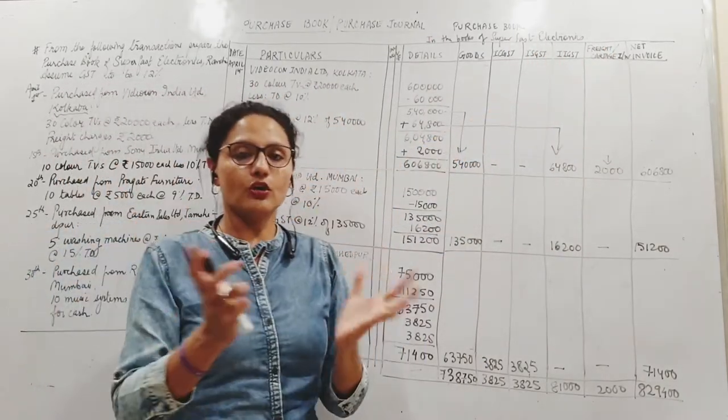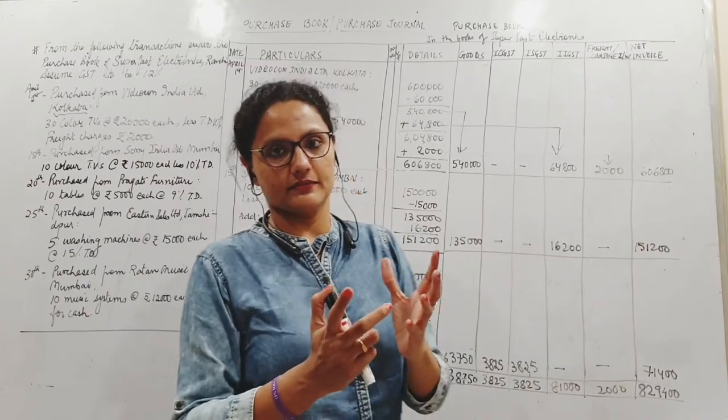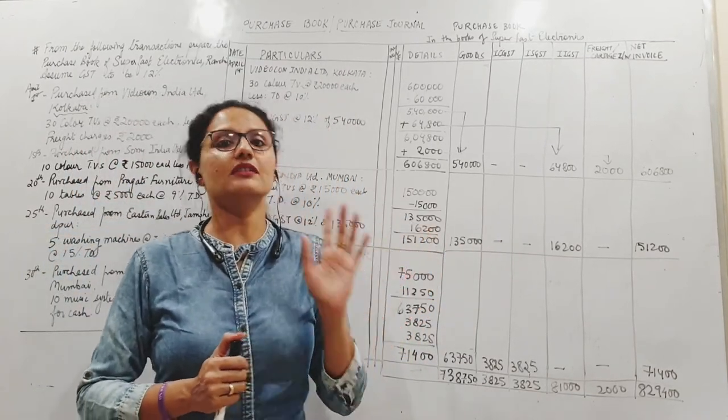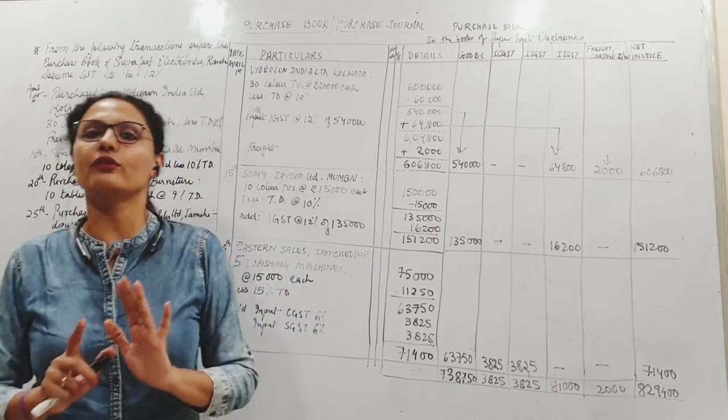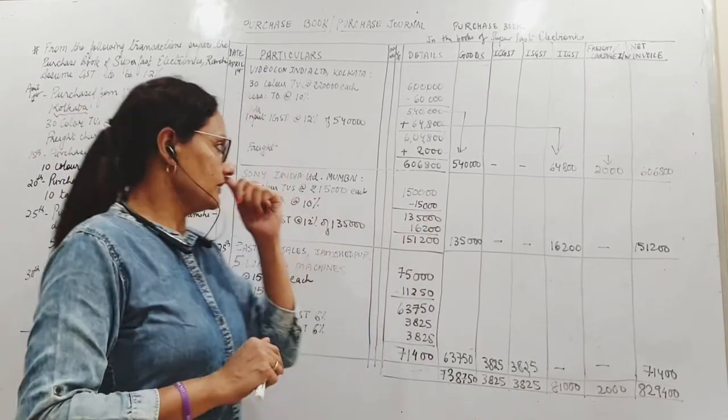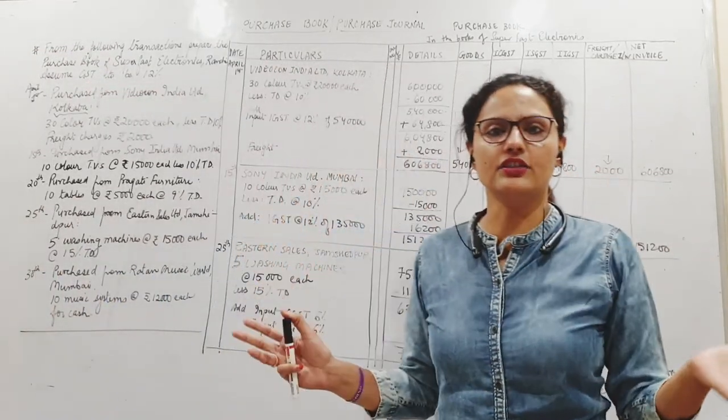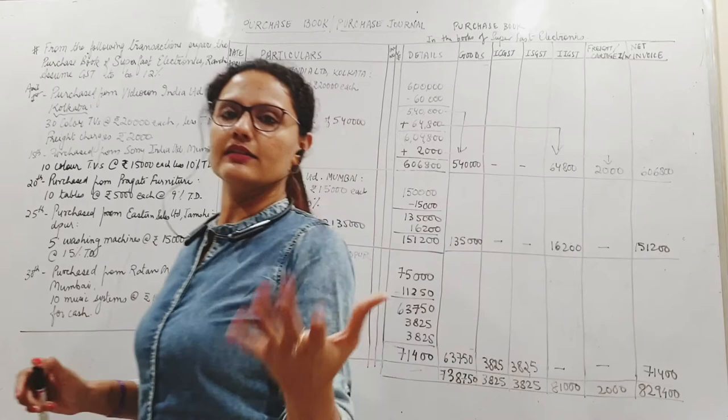Some books say that there is no need to make the freight column or carriage column, but if you refer to the council syllabus, the council syllabus very clearly states in its description the various columns it wants in the purchase book. It wants all of these: date, particular, invoice number meaning the bill number, ledger folio the page where it will be posted, details, goods meaning the cost of the goods, IGST, CGST and SGST, then freight and carriage. It is very much mentioned there, and then the net invoice - total amount, total invoice.